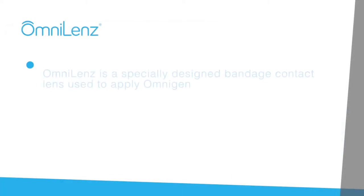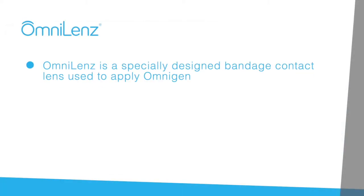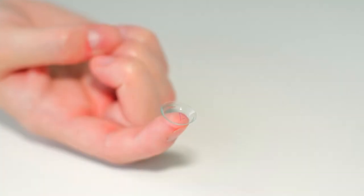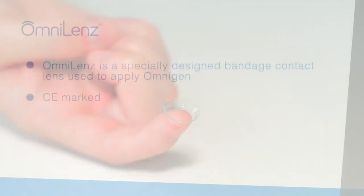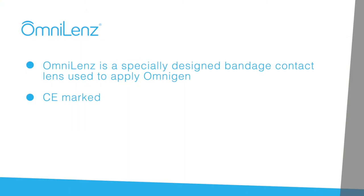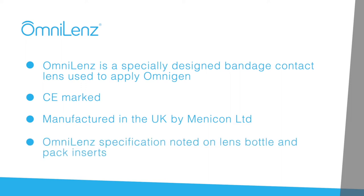OmniLens is a specially designed bandage contact lens used to apply Omnigen to the ocular surface. OmniLens is CE marked and manufactured for us in the United Kingdom by Menecon Limited. The specification of OmniLens will be noted on your lens bottle and in the pack inserts sent with your order.